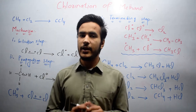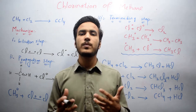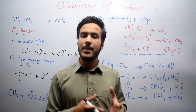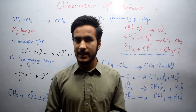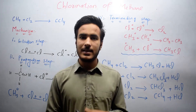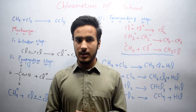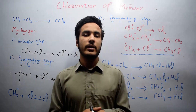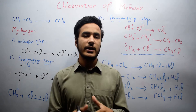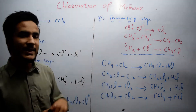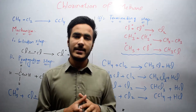A reaction in which an atom or group of atoms is replaced by another atom or group of atoms is known as a radical substitution reaction. The best example of a radical substitution reaction is the chlorination of methane — if we add chlorine gas to methane, what will be the product?